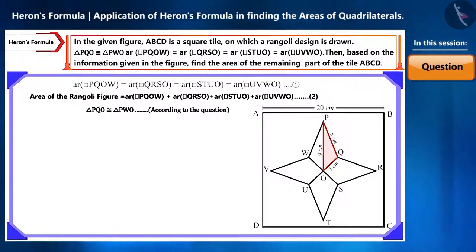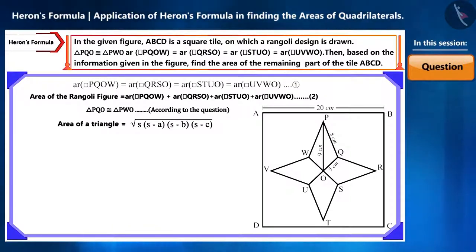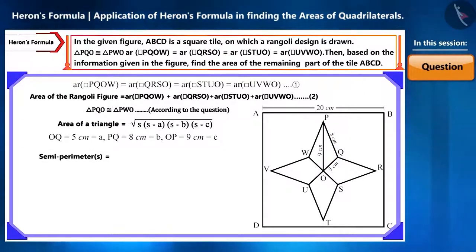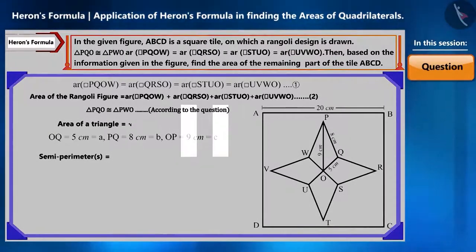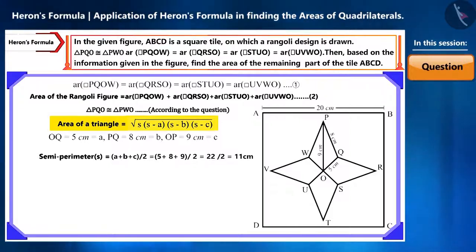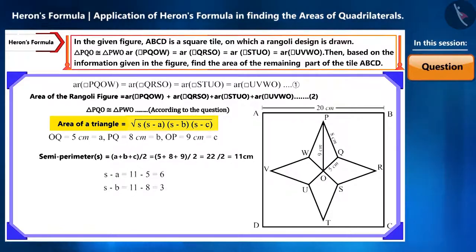In the figure, the length of all three sides of this triangle is given, so we can use Heron's formula to find the area. Let's assume OQ as a, PQ as b, and OP as c. Now we have to find the value of the semi-perimeter s. You can pause the video and try it yourself. We obtained s as 11 centimeters.